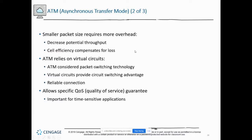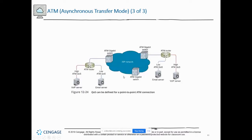ATM's smaller packet size requires more overhead, which decreases throughput, but it has efficiencies that compensate for this loss — so it's almost as efficient as other options even with the extra overhead. It relies on virtual circuits and is considered a packet-switching technology. It also allows for Quality of Service guarantees, so we can prioritize traffic — for example, VoIP traffic gets high QoS while email gets low QoS, so voice traffic takes priority over email over the network.